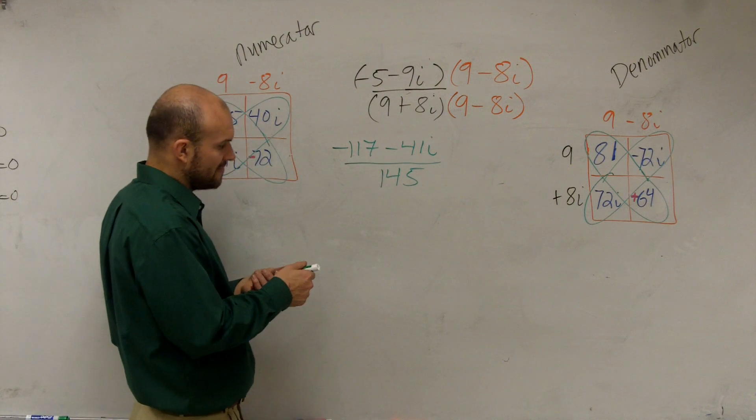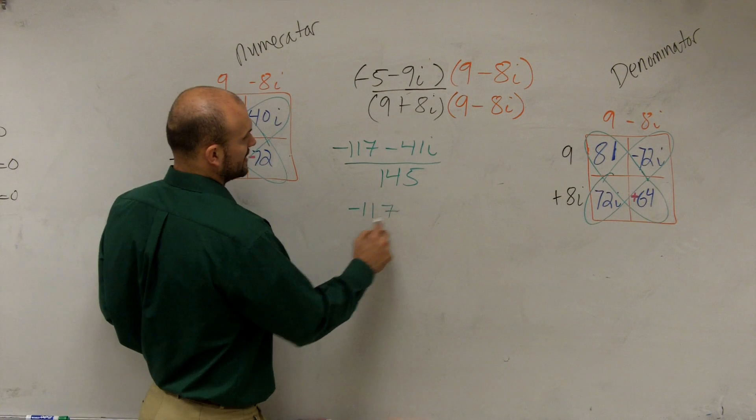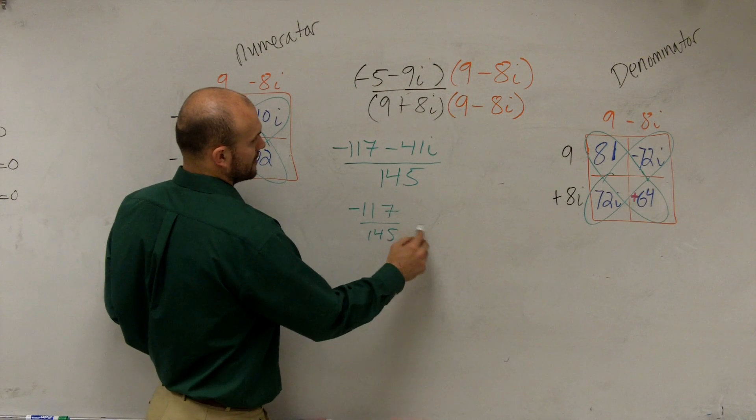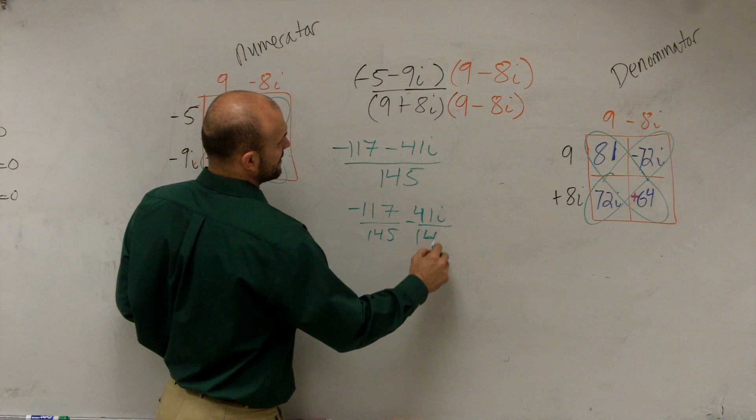Oh, I'm sorry. Well, then what we do is we just rewrite it in this format. Negative 117 over 145 minus 41i over 145.